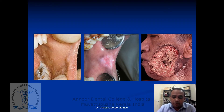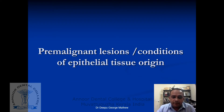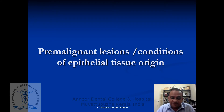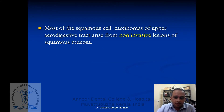Today we are going to discuss in detail about pre-malignant lesions and conditions of epithelial tissue origin. Before a lesion turns into cancer, it goes through a previous stage where it has not yet transformed into cancer but is on the way towards it. If you can identify and diagnose them at that particular point, you can provide treatment and save somebody's life.